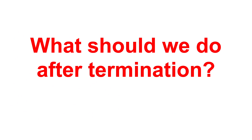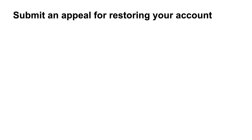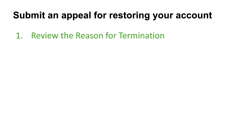If your account is suspended, what can you do to recover it or make an appeal? First, submit an appeal for restoring the account. The first step is to review the reason for termination. Google typically provides a reason — review the email or notification you received explaining why your account was terminated. Understanding the reason can help you address the issue in your appeal.